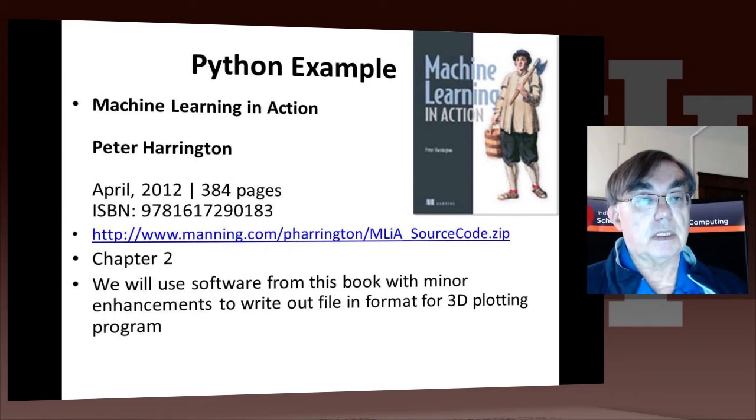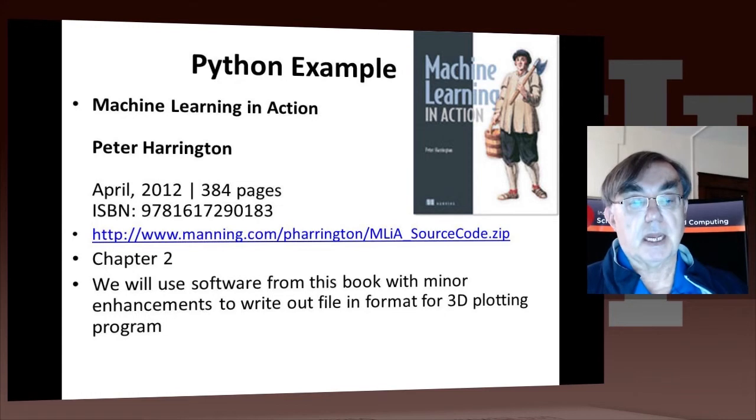In this lesson, we're going to introduce some Python code to describe an algorithm. This code is found online as part of a good book on machine learning, called Machine Learning in Action, by Peter Harrington, by Manning. You'll find it at this URL here. We're going to chapter two, and we'll use the software in this book with some minor enhancements. In particular, those will allow us to change the format of one of the files so you can use it in a three-dimensional plotting program.